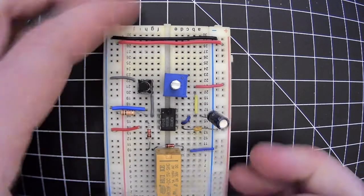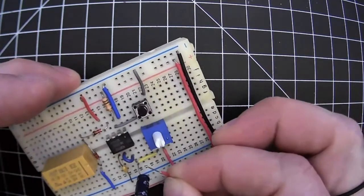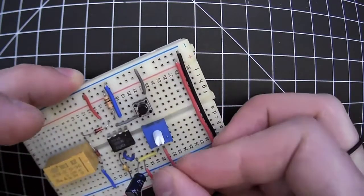And then that just leaves pin 8, the last pin on the chip, which is used to power the chip. And that's connected to the red rail to plus.